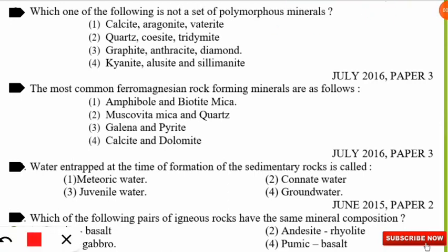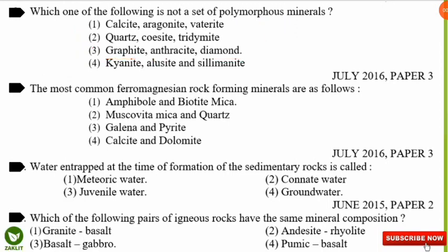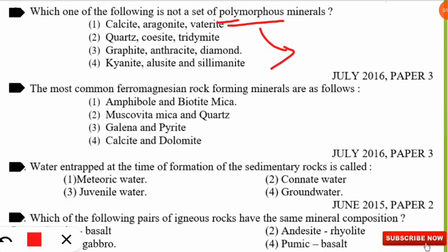The first question is: which one of the following is NOT a set of polymorphous minerals? This is a frequently asked question in the NET environmental science paper. The correct option is option 3 — graphite, anthracite, and diamond are NOT a set of polymorphous minerals. Polymorphous means different crystal structures but similar chemical composition. The sets you should remember include: calcite-aragonite-vaterite, quartz-coesite-tridymite, and kyanite-andalusite-sillimanite.